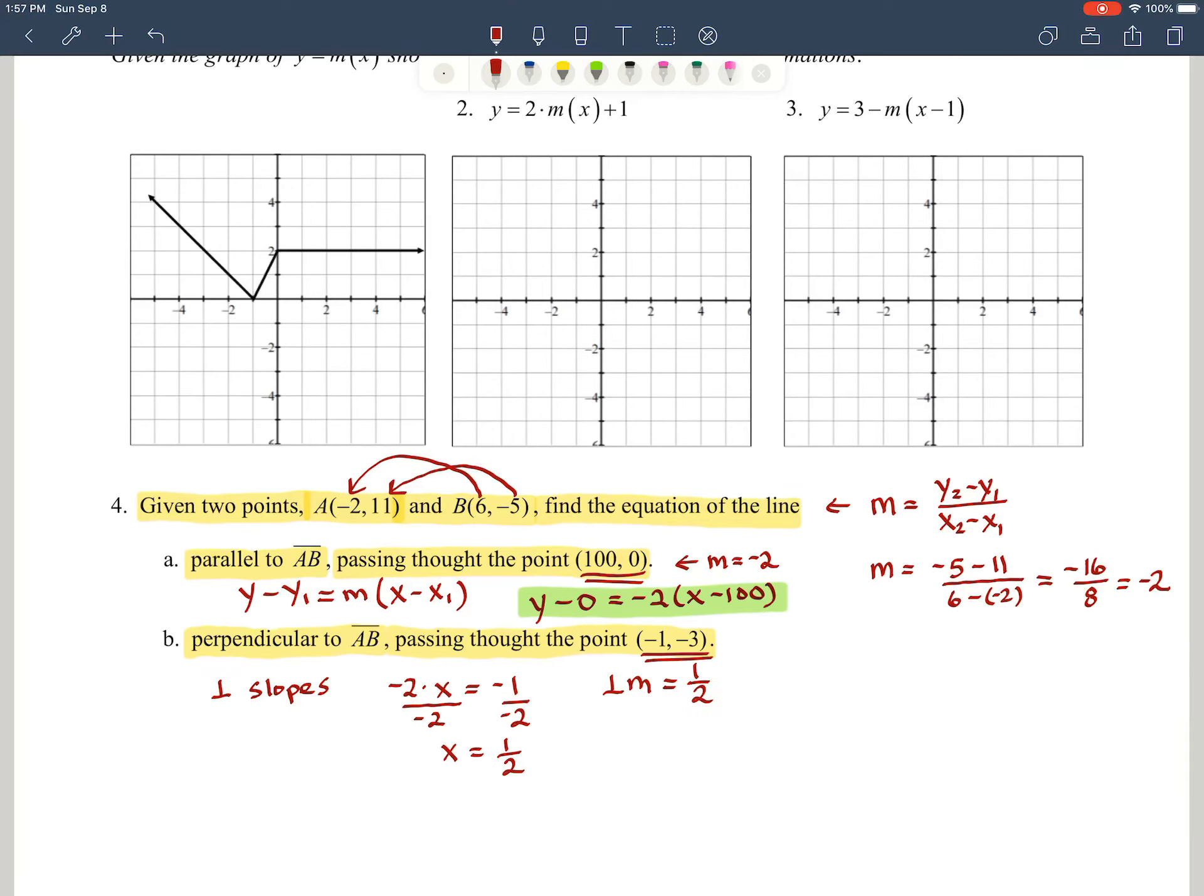Now we're just going to use that and this point to create another equation in point-slope form. So we're going to say y minus the y value. So y minus negative 3 should equal 1 half times the quantity of x minus the x-coordinate there. And if we want to simplify then, you can say that's going to be y plus 3 is going to equal 1 half times x plus 1, times the quantity of x plus 1. And that would be our answer.